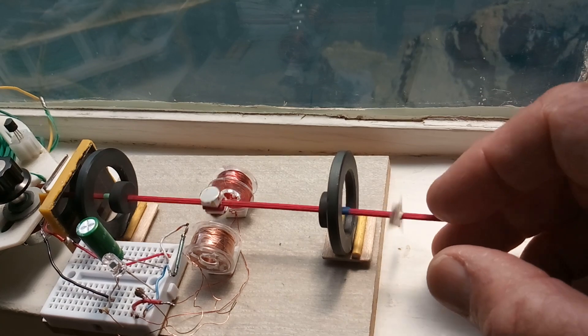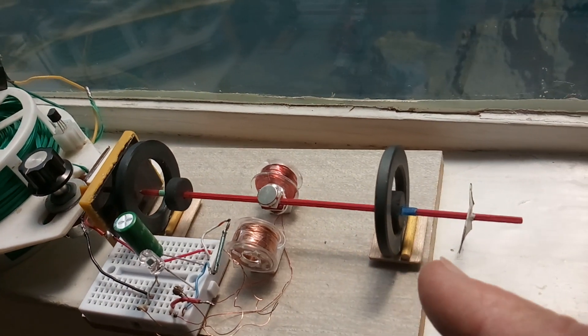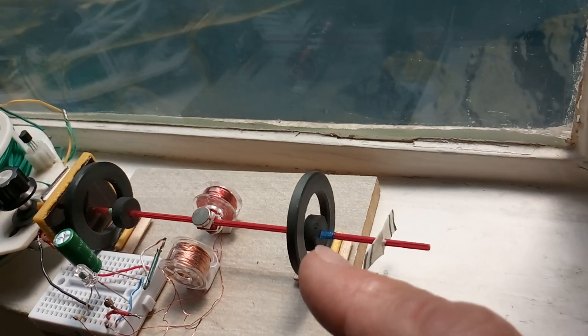And then to turn it off, you just pull it away from the magnet there and it sits on the magnet here. This is one of these Mendocino types.